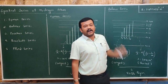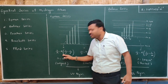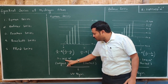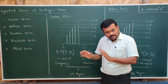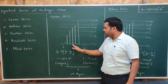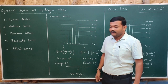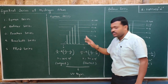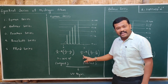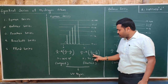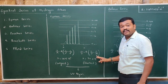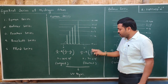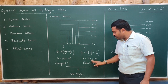Substituting Rydberg's constant into the equation gives λ = 1215 Å for the first member. Similarly, we can calculate the second and third members. For the last member (infinity to n=1): 1/λ = R(1/1² − 1/∞²), which gives λ = 911.6 Å. So 1215 Å is the longest wavelength and 911.6 Å is the shortest wavelength of the Lyman series.